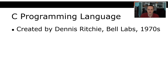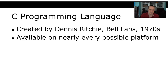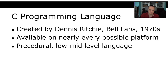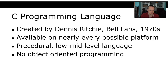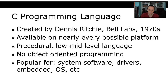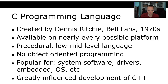You can't talk about C++ without talking about C first. C was created by Dennis Ritchie at Bell Labs in the 1970s. It is available on everything — if you have a toaster, it can probably run C. It's a procedural, low-to-mid-level language with no object-oriented programming in the traditional sense. It's very popular for system software, drivers, embedded design, and operating systems — Linux, for example, is written in C. It greatly influenced the development of C++.